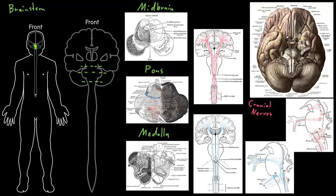The inside of the brainstem has some similarities to the spinal cord, particularly down low in the medulla where it connects to the spinal cord. Similarly to the spinal cord, most of the gray matter of the brainstem is on the inside and most of the white matter is on the outside. But it's a lot more mixed together than in the spinal cord — white and gray matter are more scattered about, although most of the gray matter is still on the inside and most of the white matter is on the outside.